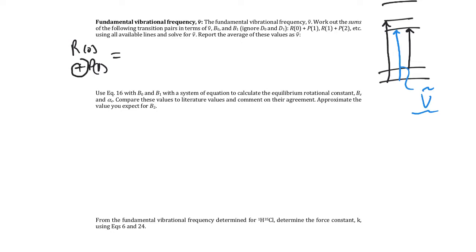And then the R0 transition, one of the ways we can say or define the R0 transition is it's equal to the fundamental, but then it has this difference of energy additional. It says to ignore D0 and D1. So this difference of energy here is just equal to 2 times B1. So the R0 would be equal to the fundamental frequency plus 2 times B1. And then the P1 would be equal to the fundamental frequency, but then it's missing this difference of energy, which is 2 times B0.